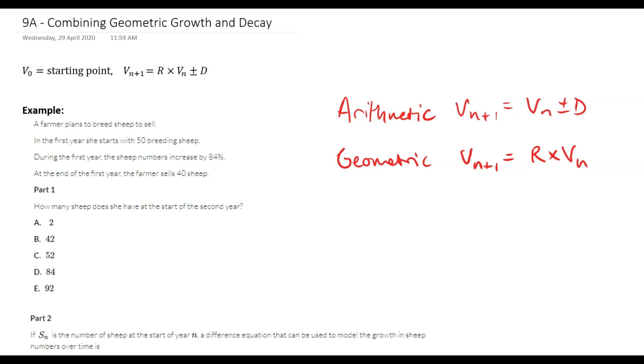With financial maths most of the time the recurrence relations we need actually have two operations. You can see here that to get vn plus one we have to multiply by r and then plus or minus d.